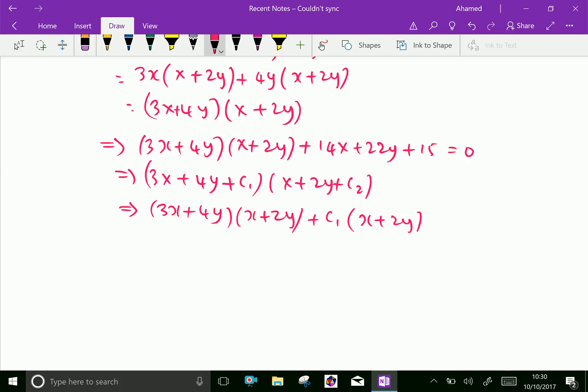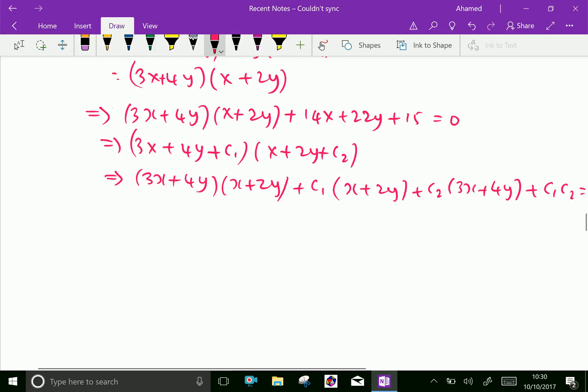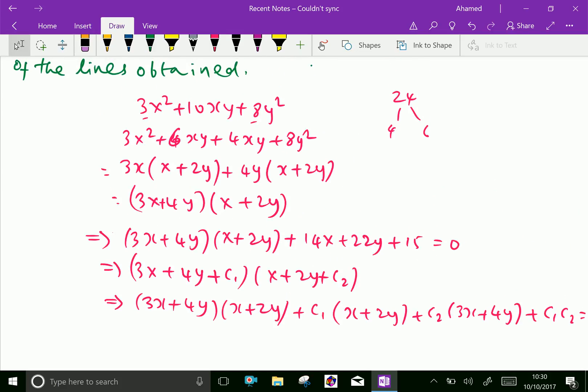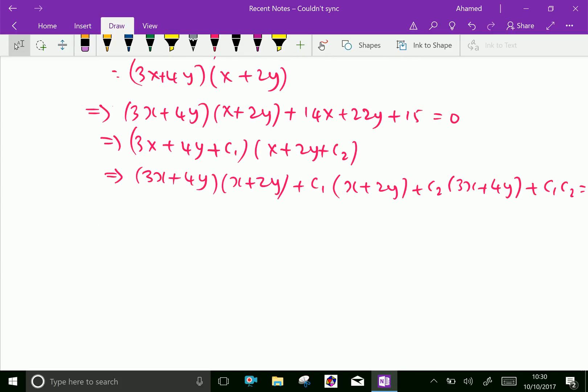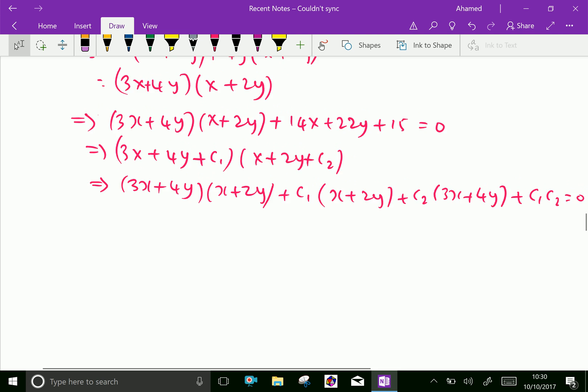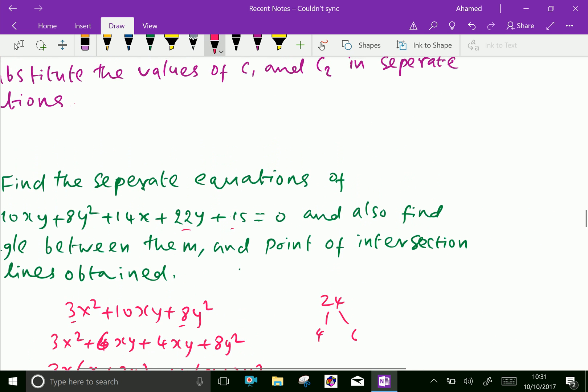3x plus 4y plus c1 into x plus 2y plus c2 equals 0. Now comparing this equation with the original equation given, we can name this as equation 2 and the original equation given is 1.